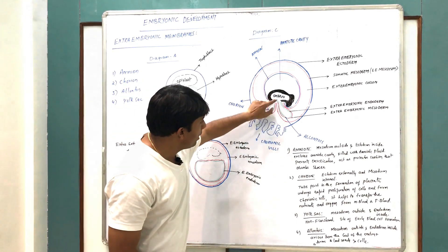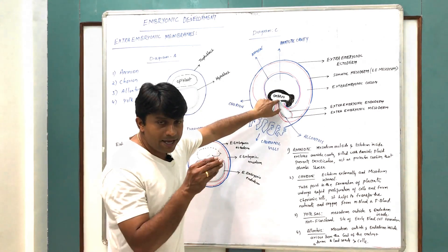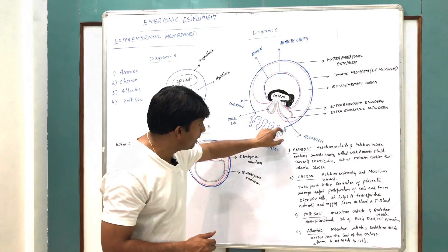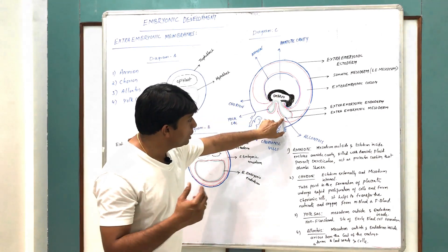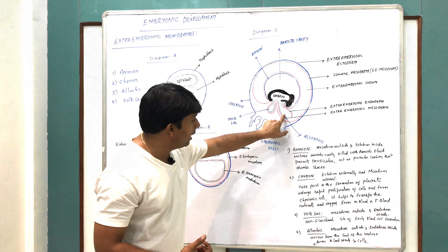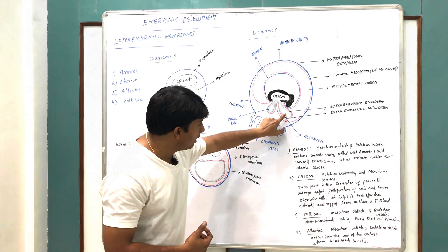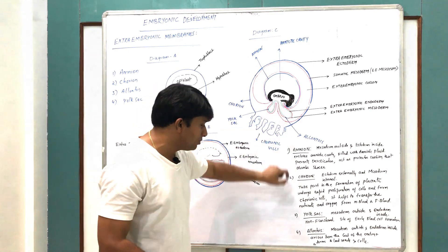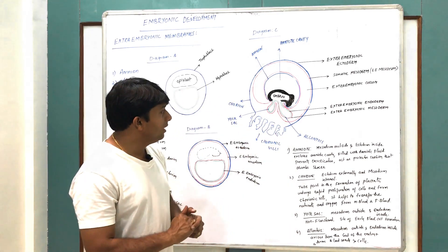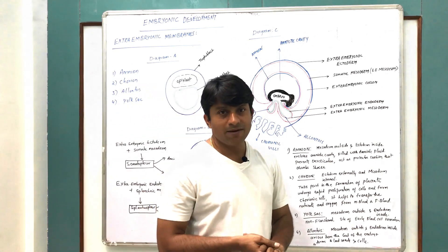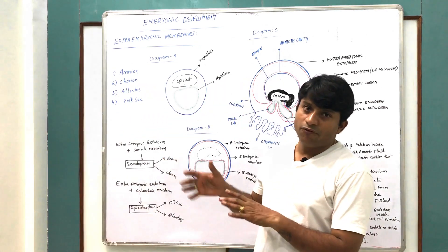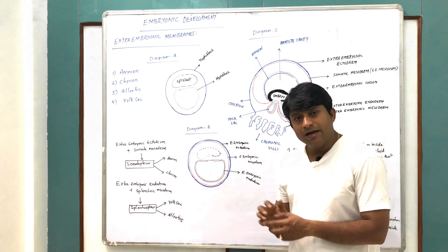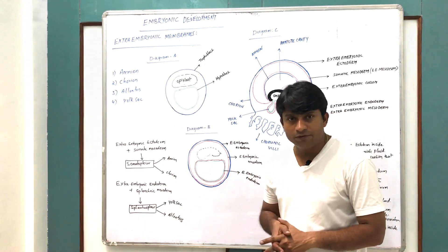The allantois arises from the last part of the gut, or terminal part of the gut, during embryonic development, consisting of mesoderm to the outside and endoderm to the inside. It does not have a major function in humans, but it does form blood vessels and cells in human embryonic development. These are the four extra-embryonic layers which develop during embryonic development and assist the development of the embryo.